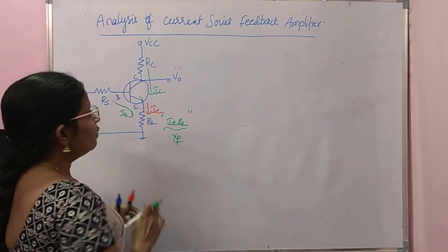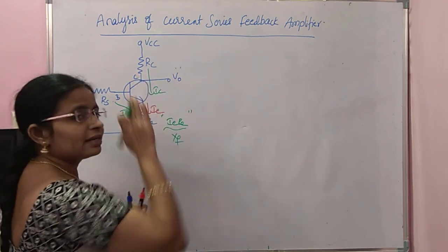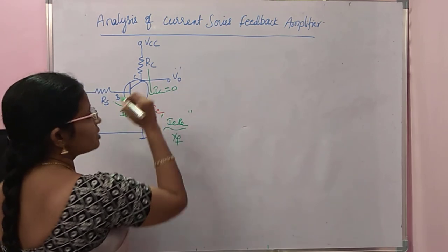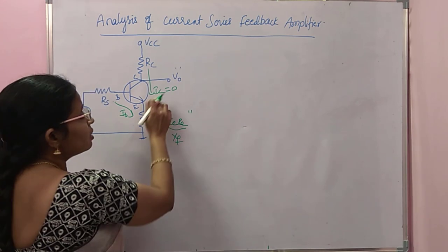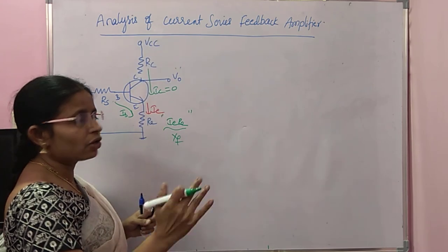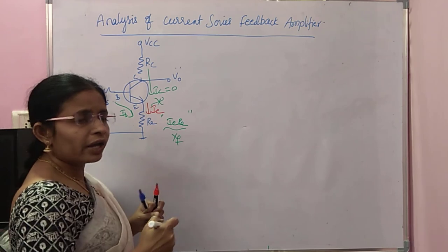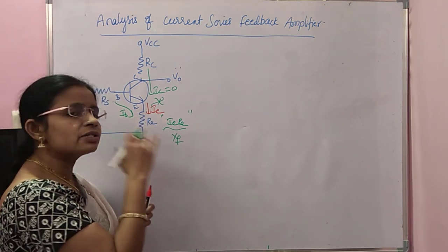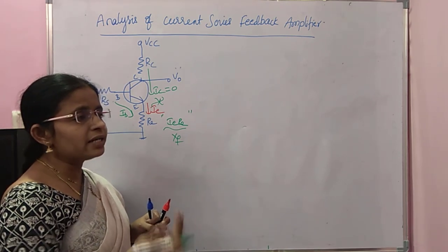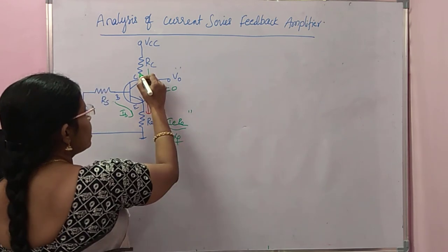Now, if we make I0 equal to 0 — that means IC must be 0 — we must open the collector and disconnect it from the supply. If you open it, there is no IC, so only IB flows and RE is no longer acting as a feedback component, meaning the feedback becomes 0. Hence, this is current sampling.